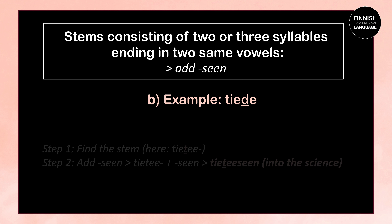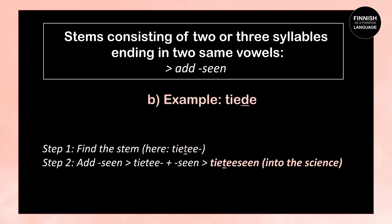Another example: tiede, which means science. The stem is tieta — here we see consonant gradation changing. Then we add -seen: tieta + seen = tietaseen, which means into the science.